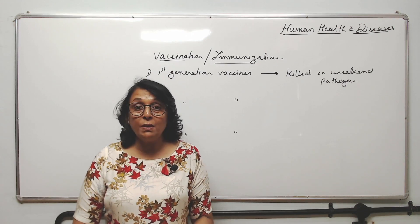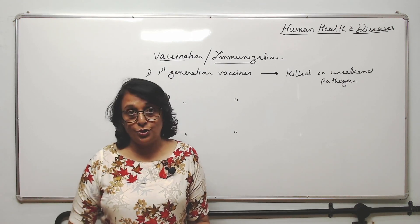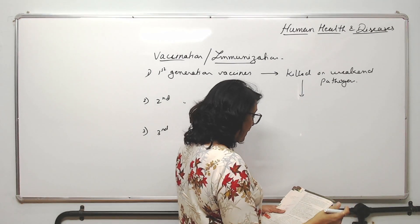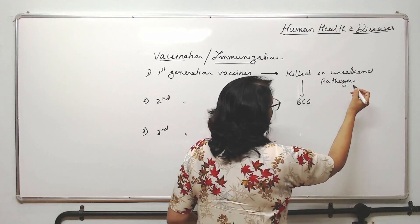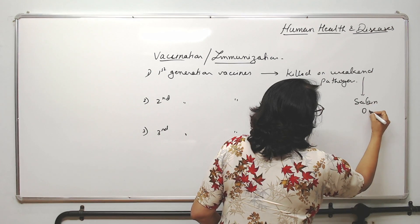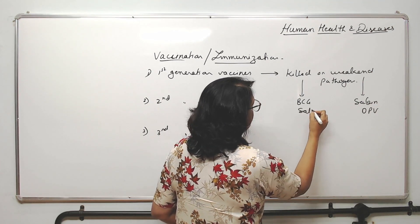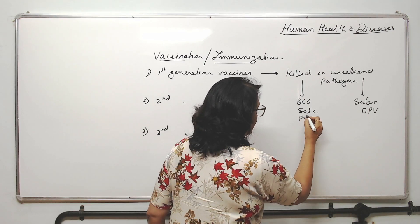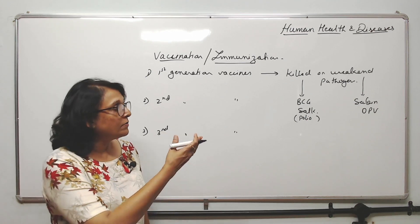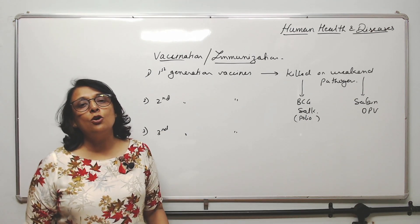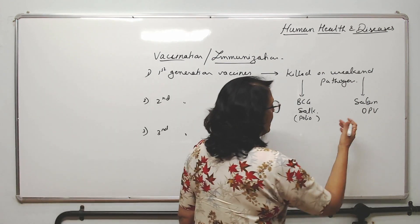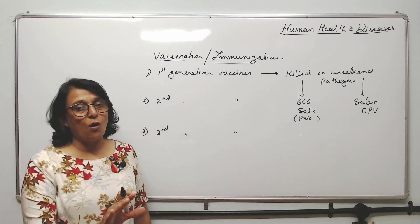But live vaccine does not mean that you are using a properly active pathogen. For the killed pathogen, we can take the example of BCG. For the weakened pathogen, we can take Salk — that is the oral polio vaccine — and here we also take Sabin, which is also a polio vaccine. Against measles also we have a weakened vaccine, and against cholera also we have the weakened one. So this is the orthodox method.